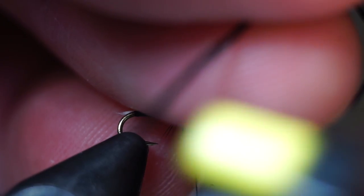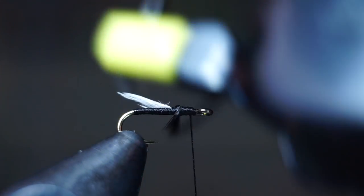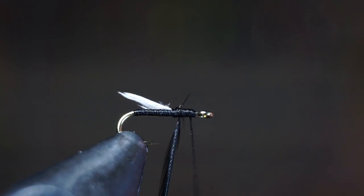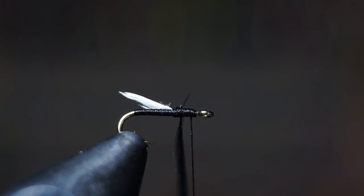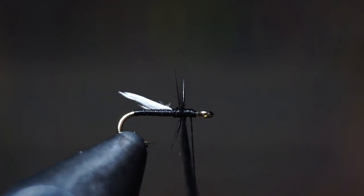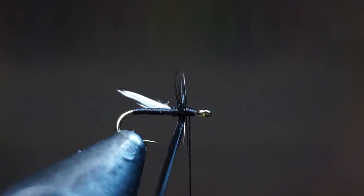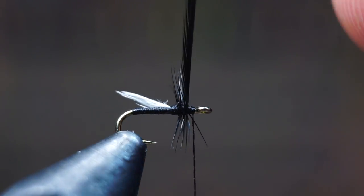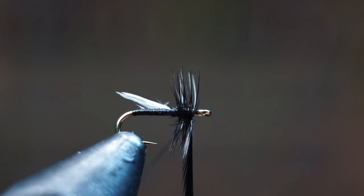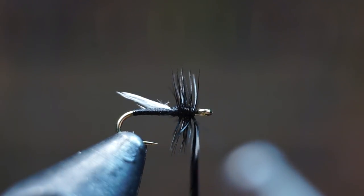Clip off any excess feather, then grab the tip of your feather with some hackle pliers and proceed to make very tight wraps up to where your thread is. Then capture the feather with two wraps, holding the feather about 60 degrees while wiggling the thread through the barbs.